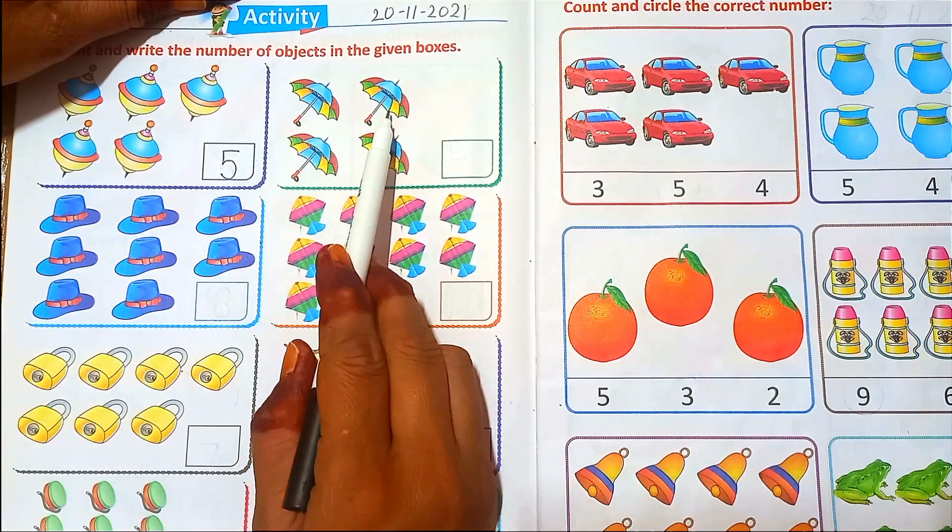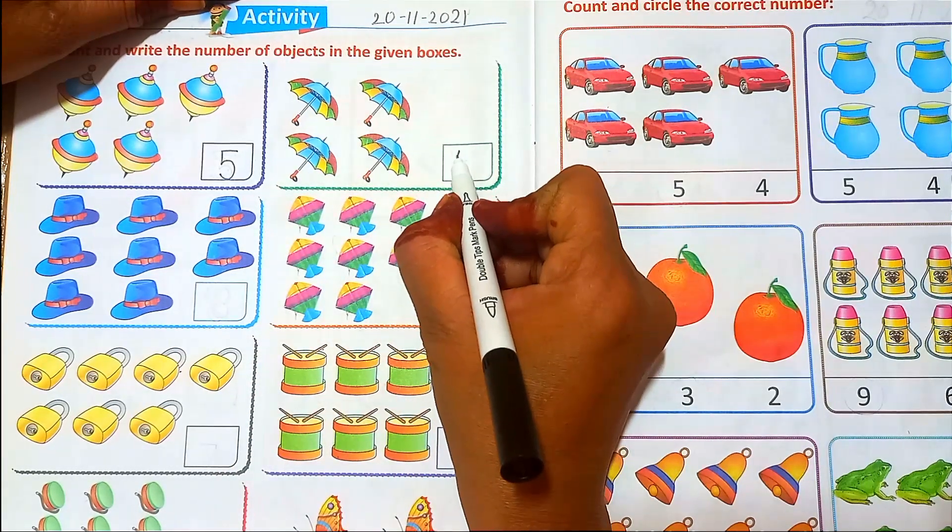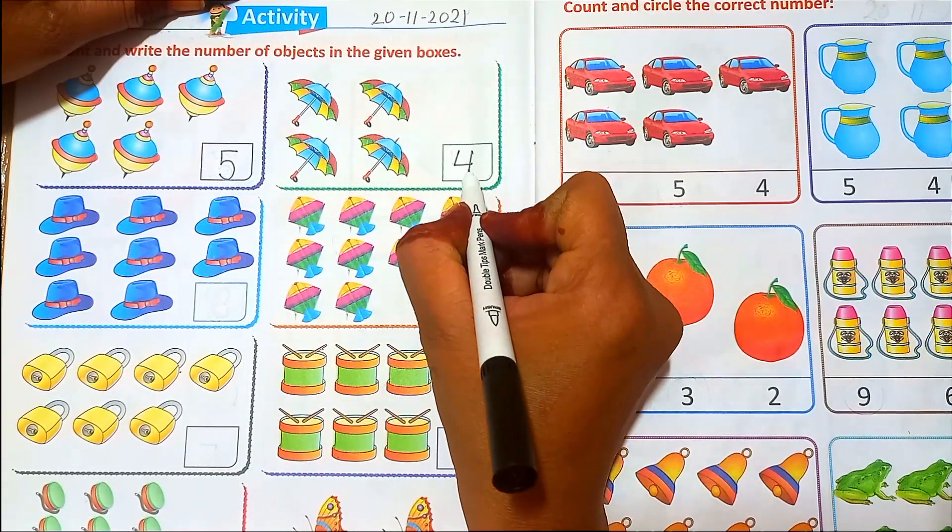Next. One, two, three, four. Four umbrellas. Write down number four.